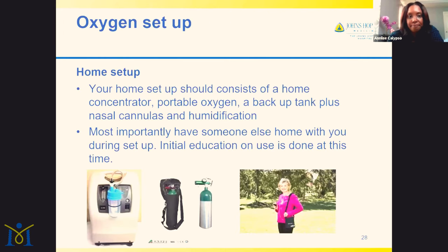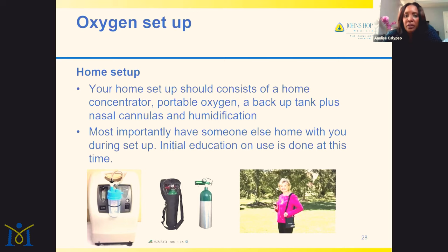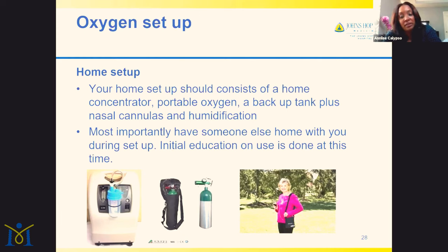For your home setup, when your oxygen order comes, it should consist of a home concentrator, some sort of portable oxygen, a backup tank, nasal cannulas, and humidification depending on your oxygen level. The most important piece is the backup tank — if there's a blackout or malfunction in your home unit, that large gas tank will provide the oxygen you need. During the initial setup, it's really good to have someone else there with you so that the education you both receive is done at that time.